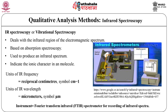Qualitative analysis determines the nature of chemical species in a sample — it can tell us whether a particular atom, ion or compound is present or absent, but does not provide information about its quantity.